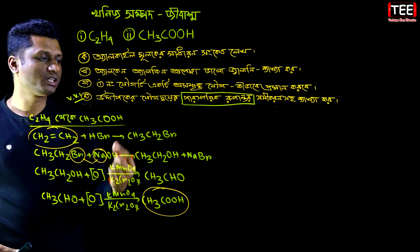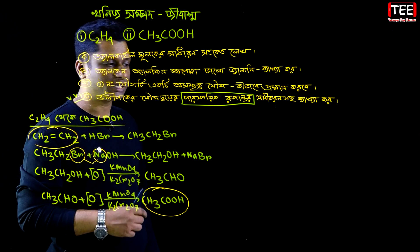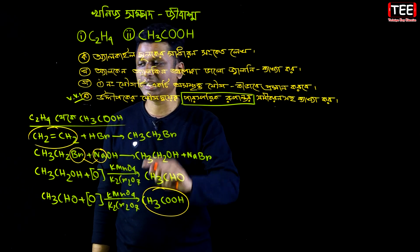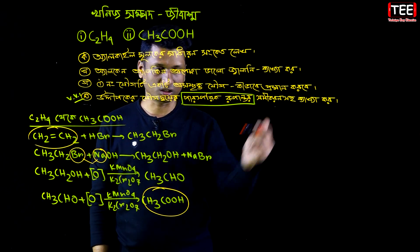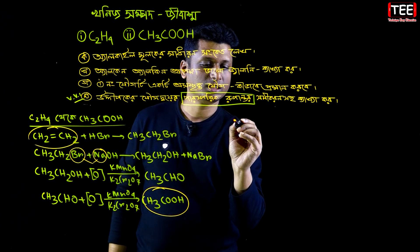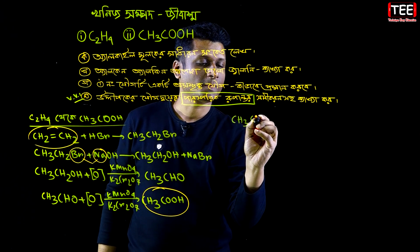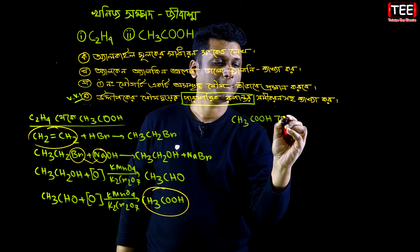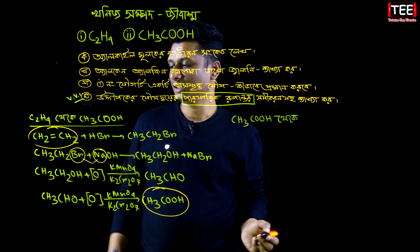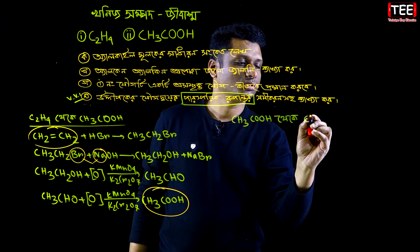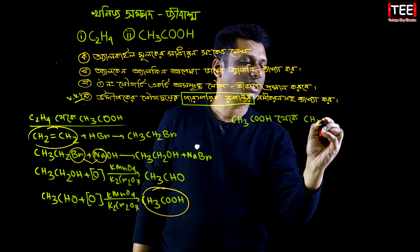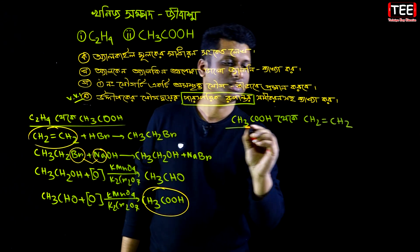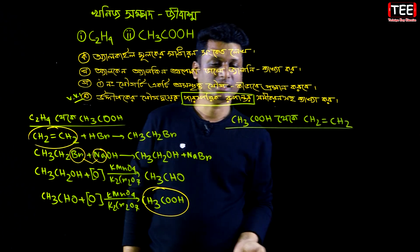This is the previous question. What do we do with it? This product is called Ethanoic Acid. This is Ethane.